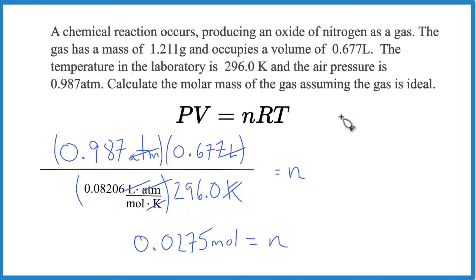All we have to do, we said molar mass has the units of grams per mole. So we'll put our 1.211 grams over the moles right here. We just found that. And when we divide, we'll have grams per mole. That's the units for molar mass.